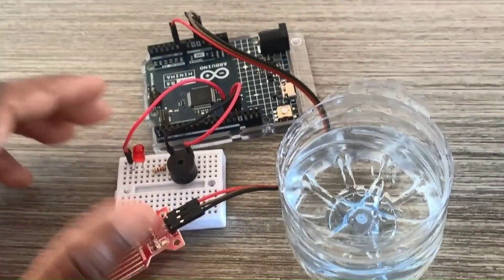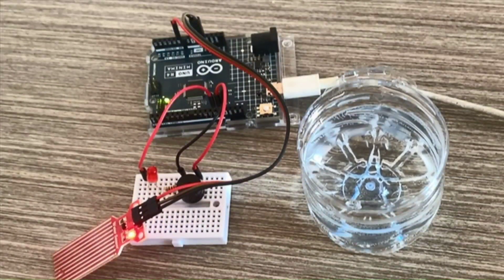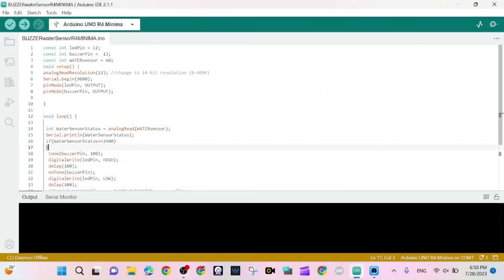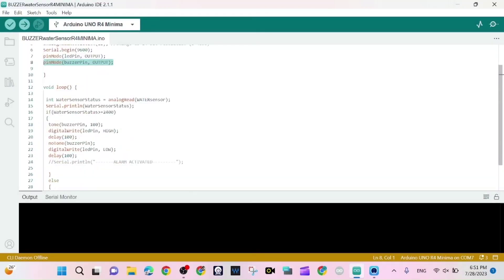Now we jump right into the program. That's the LED pin, the buzzer on pin 13, and the water sensor pin on A0, the analog pin. Here we set the beat resolution to 12 bit. We start the communication. The LED pin is output and the buzzer pin is also in output.